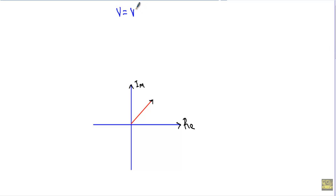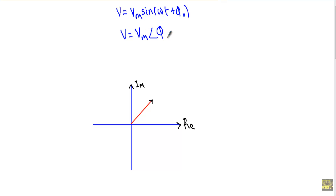So when we have an alternating quantity V = Vm·sin(ωt + φ₀), converting it into phasor form gives V = Vm∠φ₀. Here φ₀ is the phase angle and Vm is the peak or maximum amplitude. This is the polar form of the phasor.